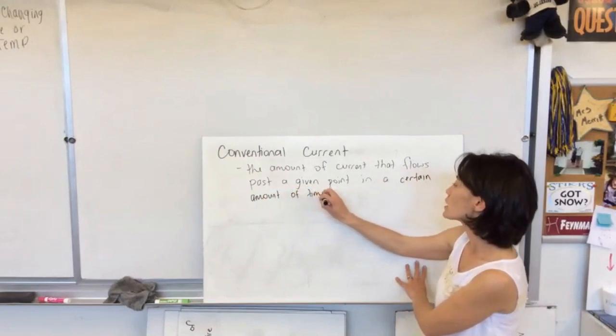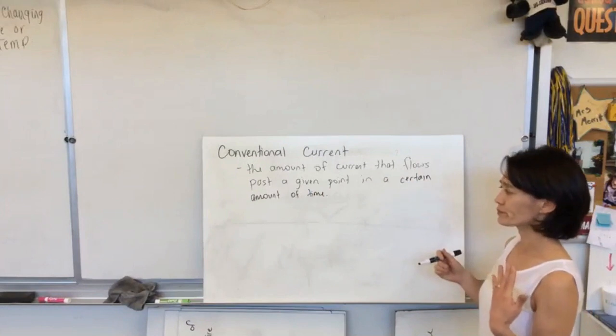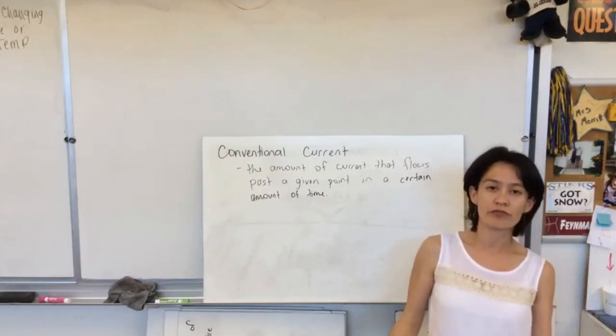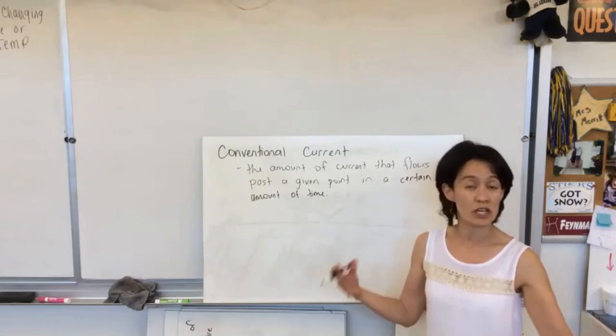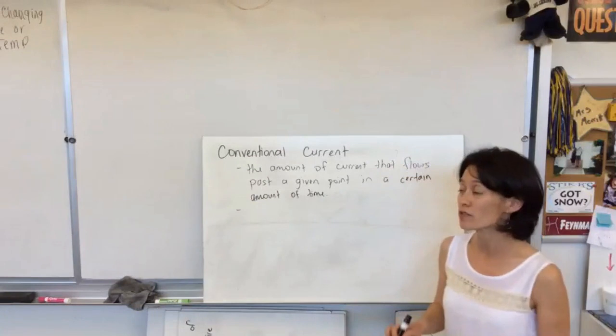And I talked about this earlier with the fact that technically, it's the electrons that are moving, but remember when they first defined it, they didn't really know which ones move, and so they just decided it was the positive ones that move. So conventional current is the direction that positive charges would flow.